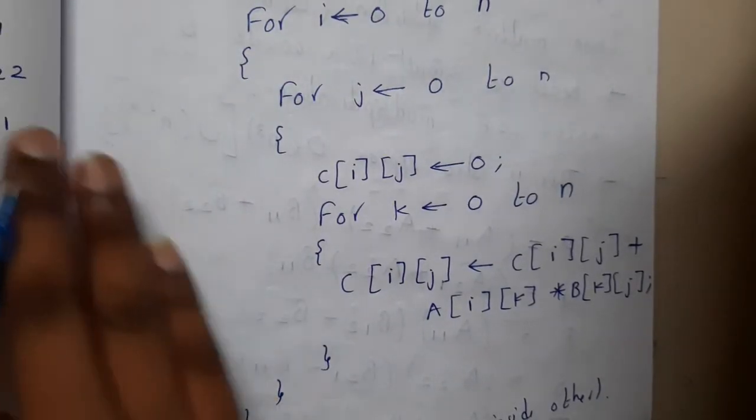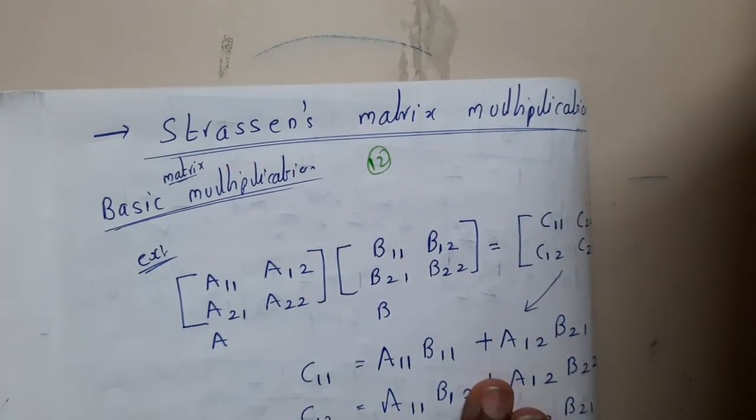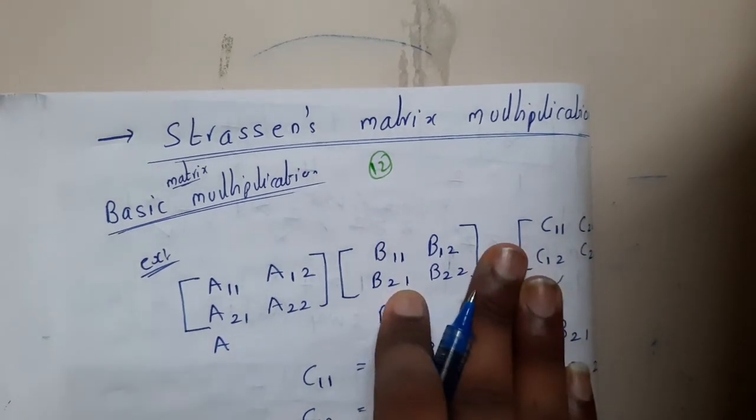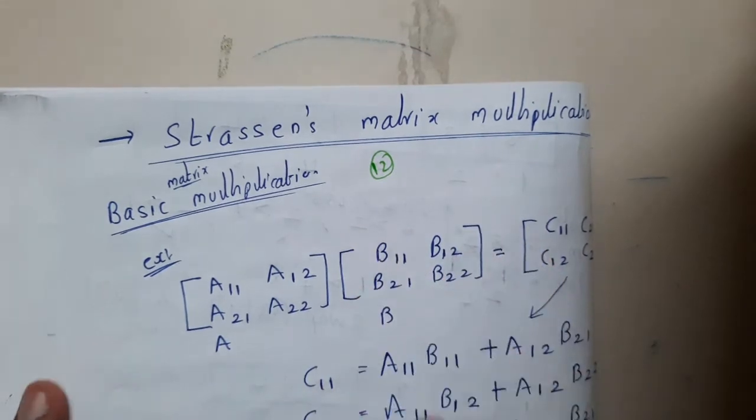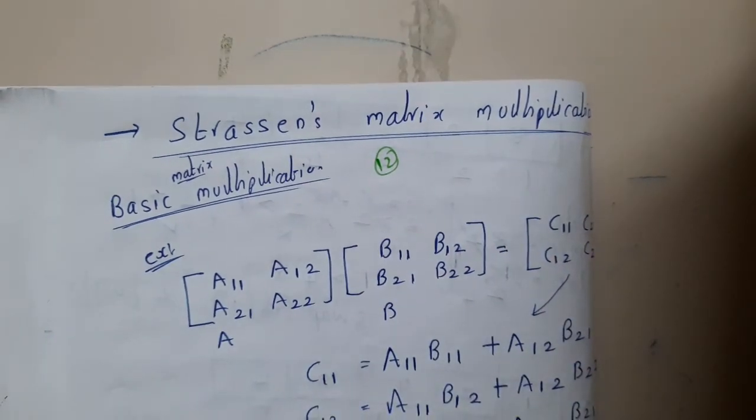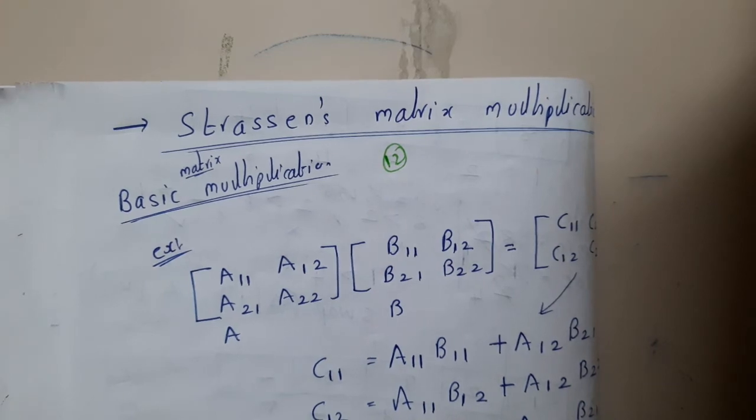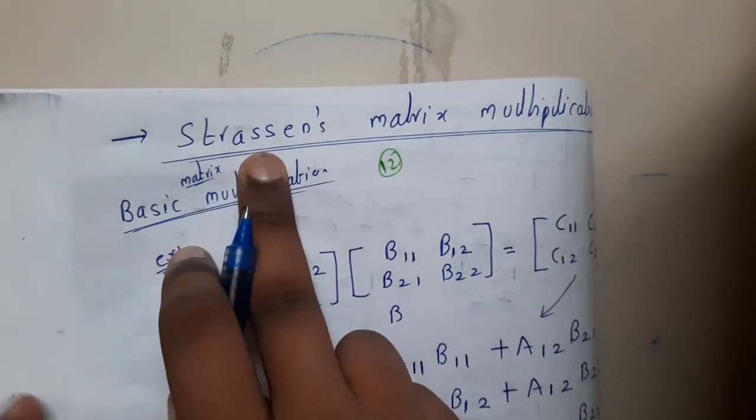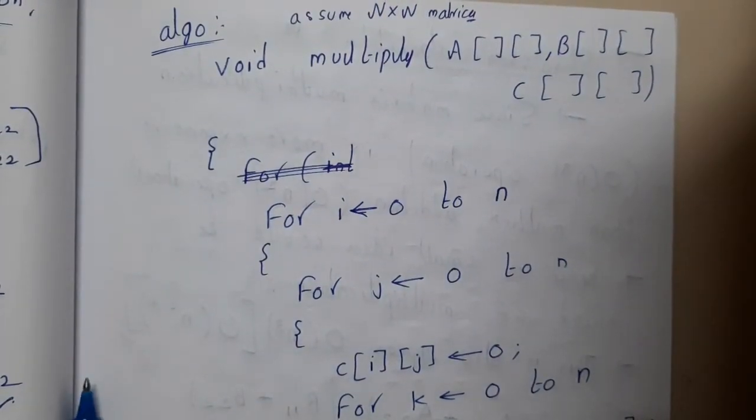That is how the selection sort algorithm works. Till now, we are done with the main sorting algorithms. In the next lecture, we'll be going through Strassen's matrix multiplication. We already know how matrix multiplication is done, but Strassen gave an efficient way to do it. We'll discuss that in the next lecture. Thank you for watching.